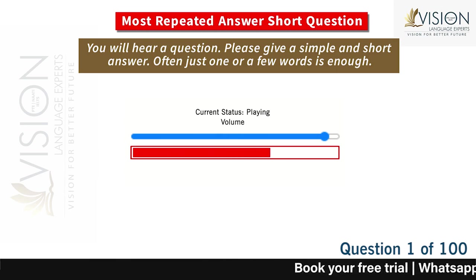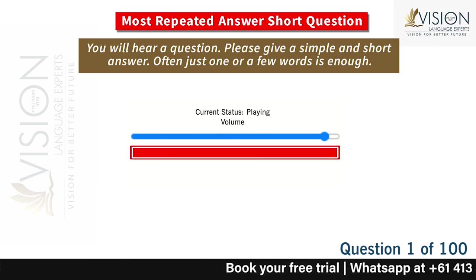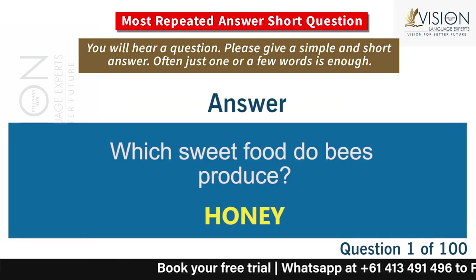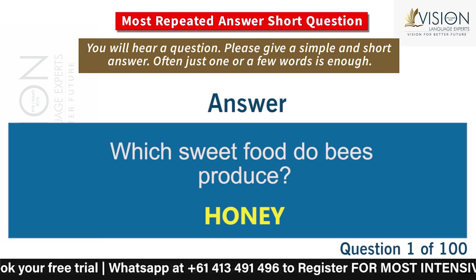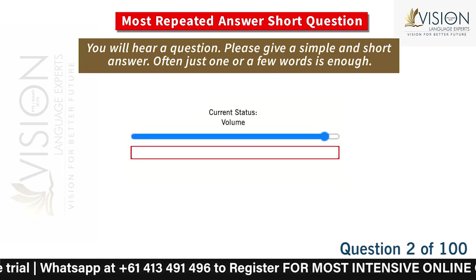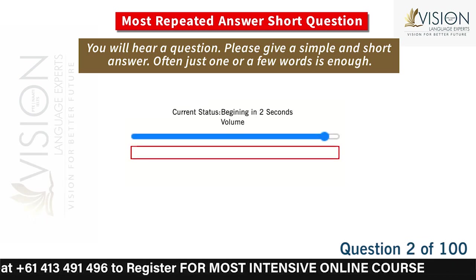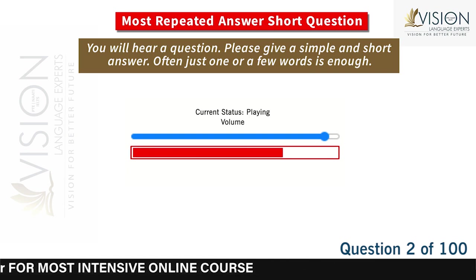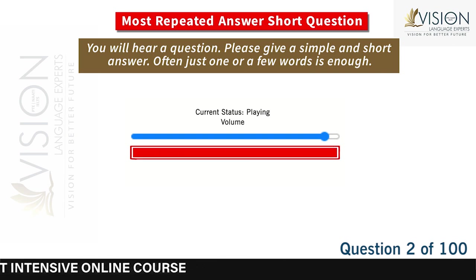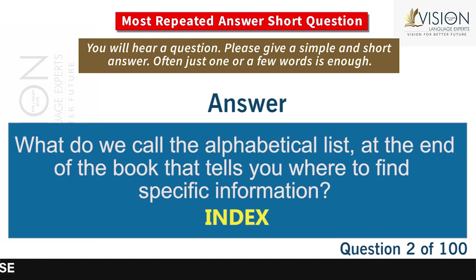What do we call the alphabetical list at the end of the book that tells you where to find specific information? Index.